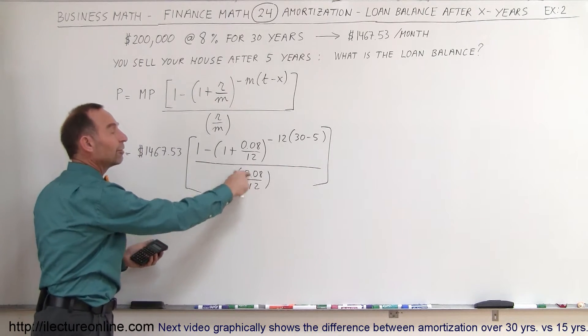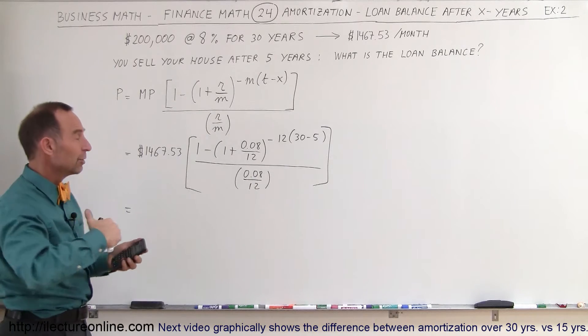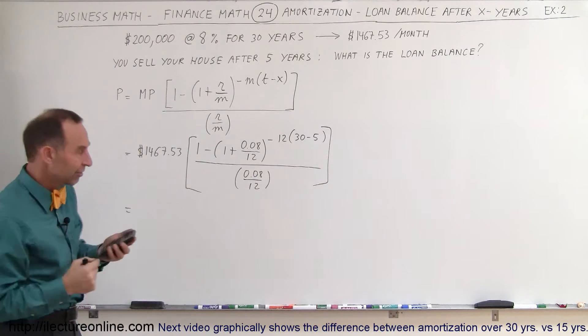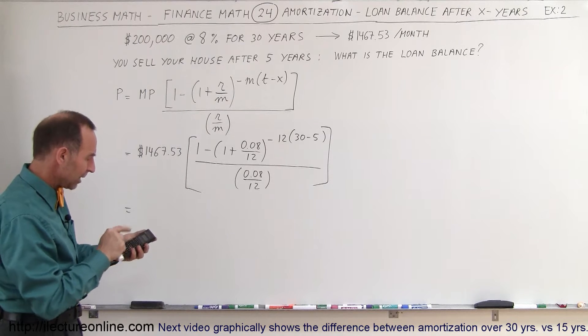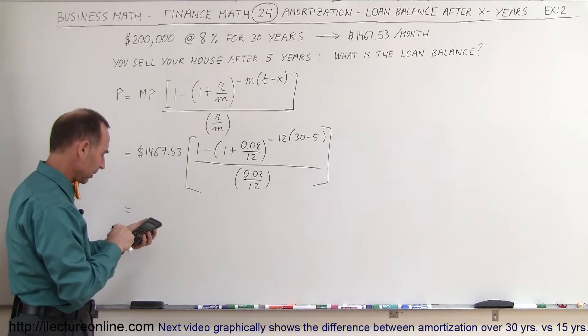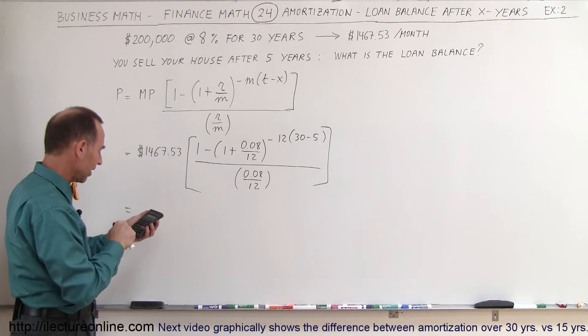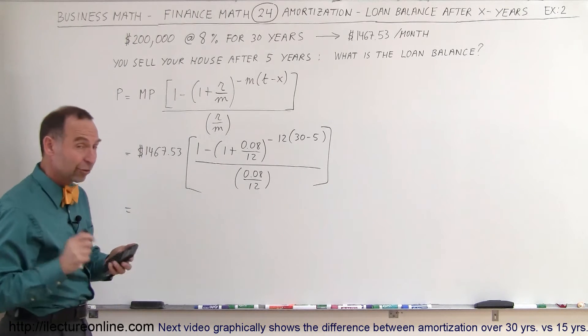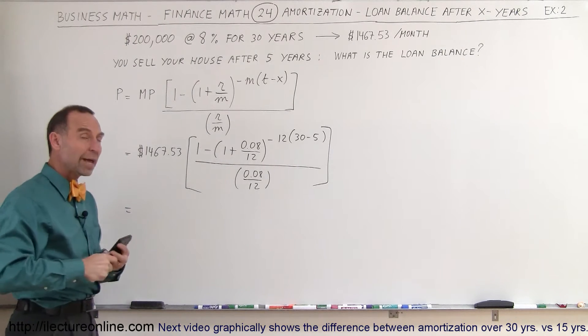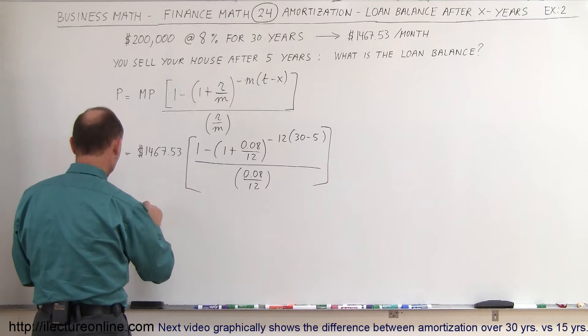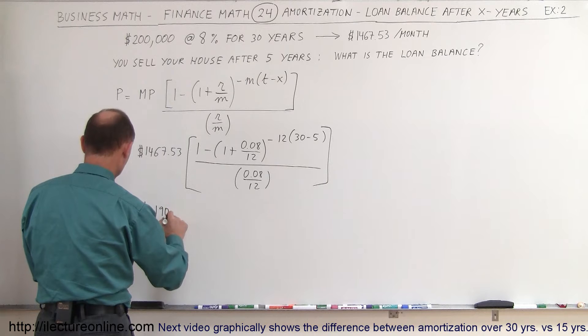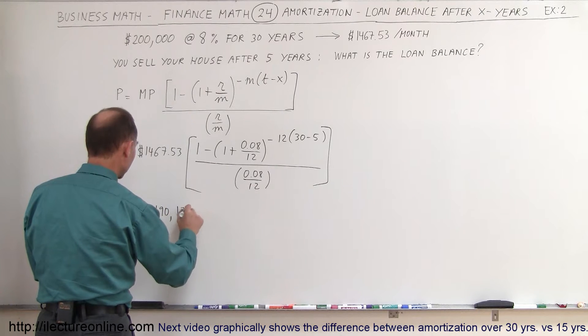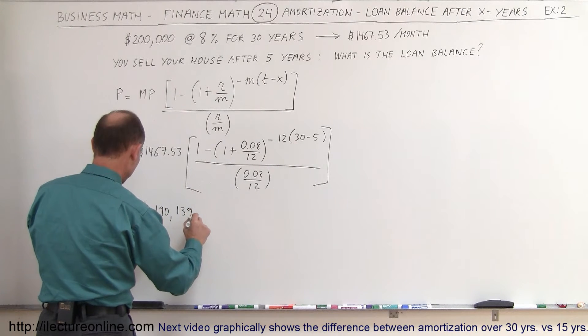Then we multiply times 12 and divide by 0.08 because when we divide by a fraction, it's the same as multiplying by its inverse. So times 12 divided by 0.08. And then we multiply that times the monthly payment of $1,467.53. So how much do you still owe the bank after five years of making payments? You'd be surprised that it would still be $190,139.82.